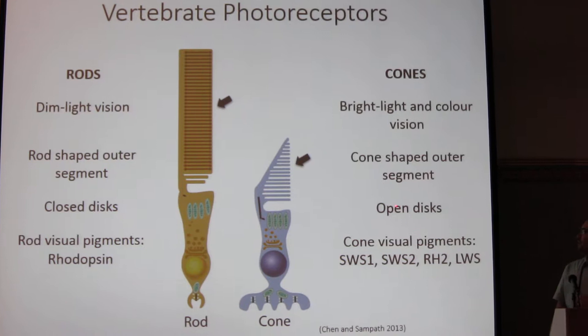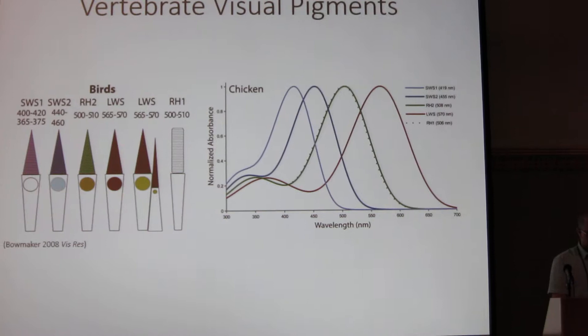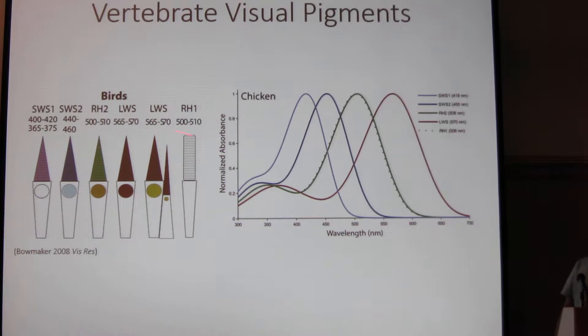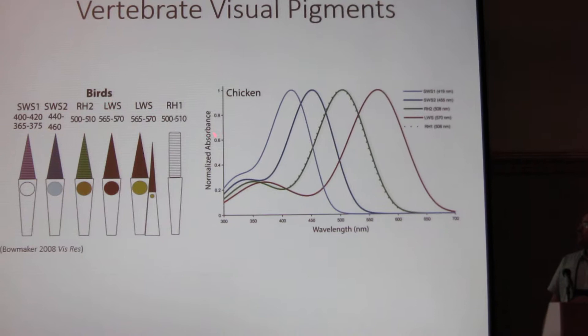In vertebrates, the ancestral complement is four different cone pigments that each absorb at a different wavelength of light, and this allows animals to have a wide range of spectral sensitivity, as well as, in the case of the chicken shown here, tetrachromatic color vision. However, in rods we only have a single type of visual pigment.